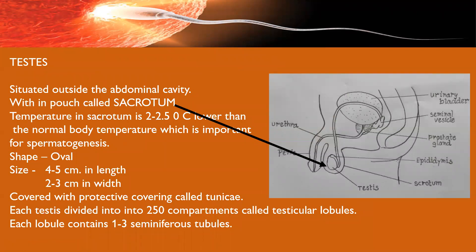Now let us come to the detailed structure of the testes. The testes are not present in the abdominal cavity — they are situated outside the abdominal cavity. Outside the abdominal cavity there is a pouch known as the scrotum. The importance of this arrangement is that the temperature inside the scrotum is 2 to 2.5 degrees less than normal body temperature, and this lower temperature is required for spermatogenesis.